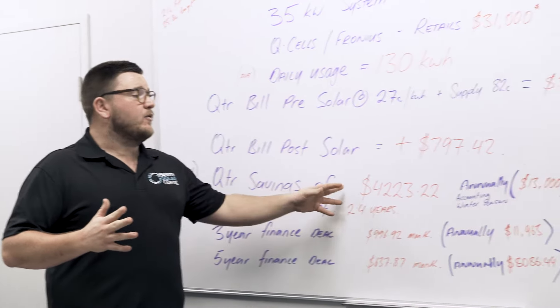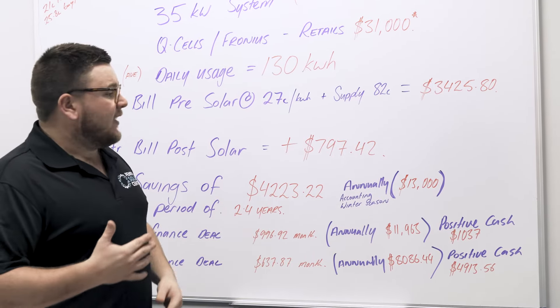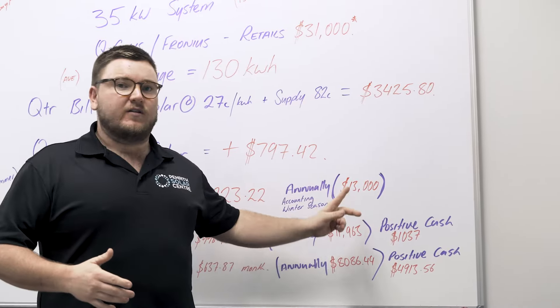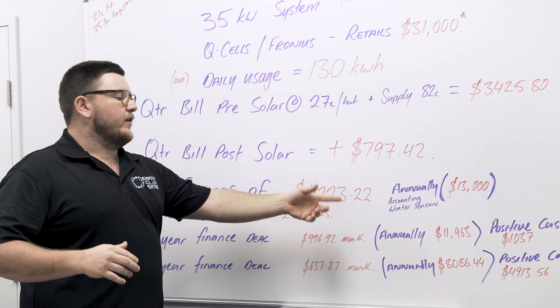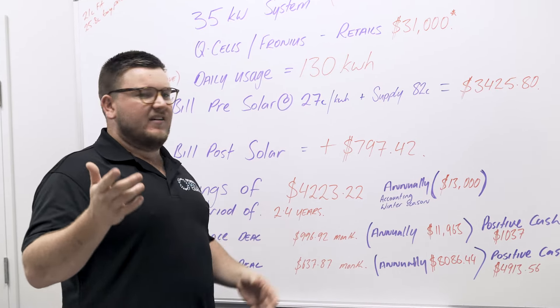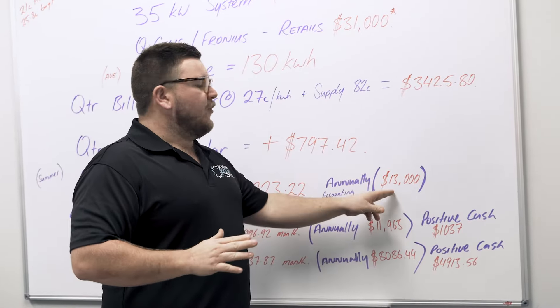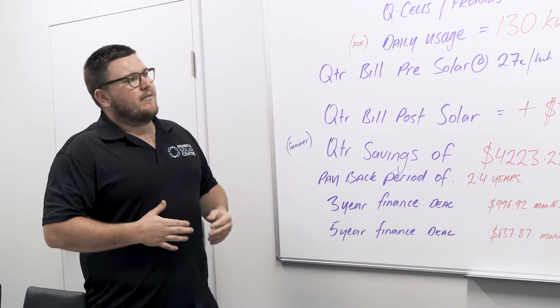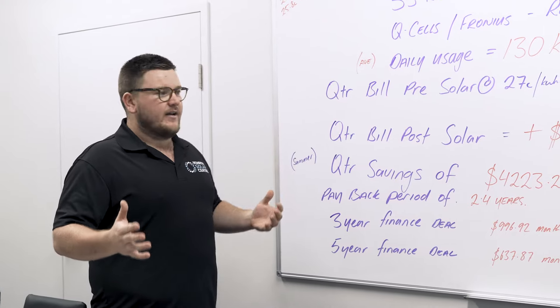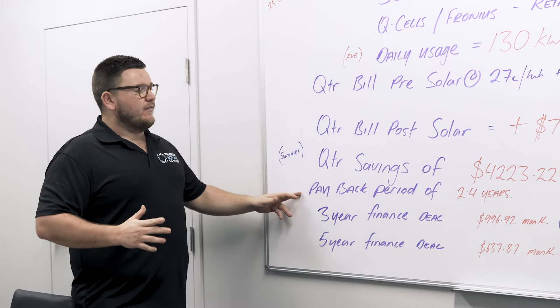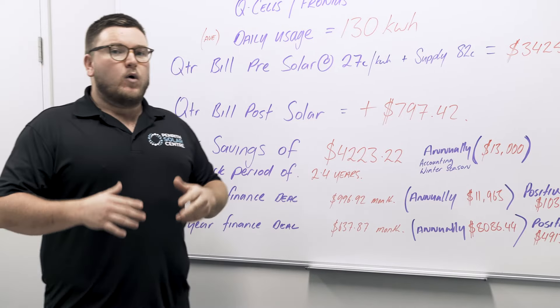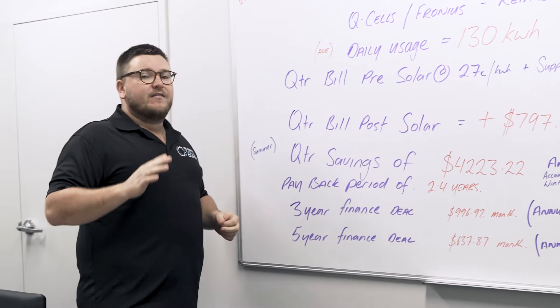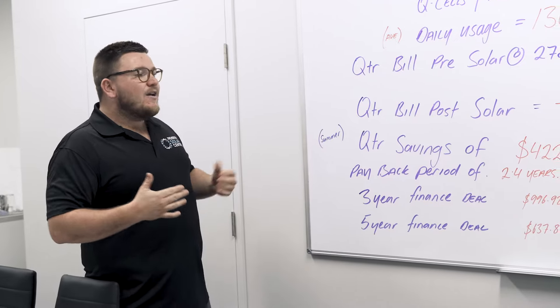What that equates to annually, and keeping in mind we've got winter and we've got autumn, spring, we expect about a $13,000 savings. So if we times our $4,223.22 by four seasons, that gives us around 16 to 17 thousand, not quite accurate. $13,000 is more about where we'd expect to see our savings. Now if we paid $31,000 for that system and it's saving us $13,000 annually, our payback period of that system is 2.4 years. Now what a payback period is is how much money you put in and how quickly does that come back in savings. 2.4 years is a very very short period of time.